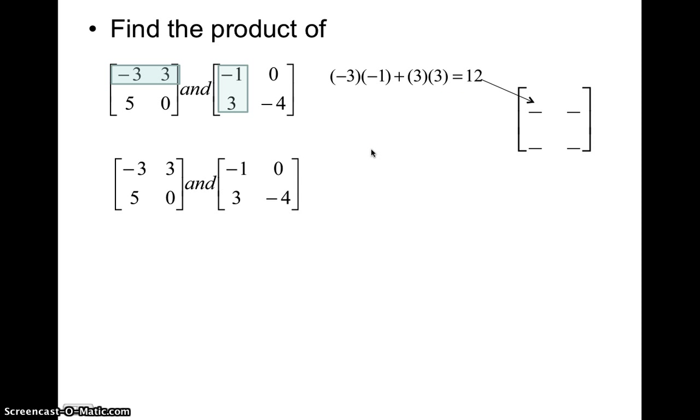We'll do it again, this time with row one, column two. Negative three times zero, three times negative four. Negative three times zero, plus three times negative four is going to be negative 12. The answer will go in row one, column two of our product right there.